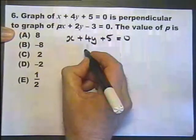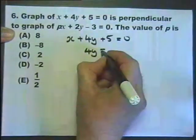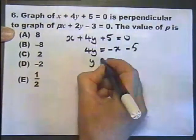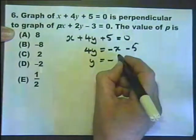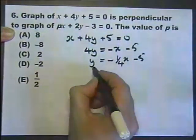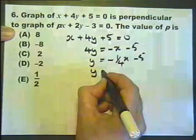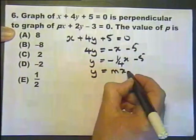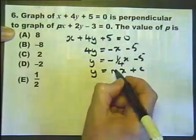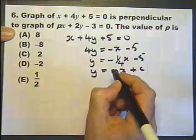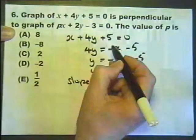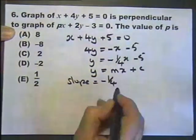Let's subtract X and 5 from both sides, then divide both sides by 4. So I can write that as X over 4, or a quarter of X. The reason I've done that is once it's in that form — the general equation of a straight line — we know the gradient, that's the letter M, or the slope. The slope or gradient of that graph is minus a quarter.